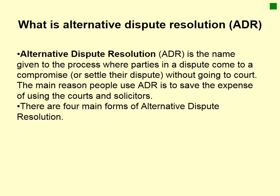This video is going to have a look at alternative dispute resolution, also known as ADR. This is the process where parties in a dispute come to a compromise, often known as a settlement, without going to court. The main reason people use ADR is it saves the expenses of going to court and they can quite often get away with not using solicitors. There are four main types of ADR and then an extra one we're going to look at.